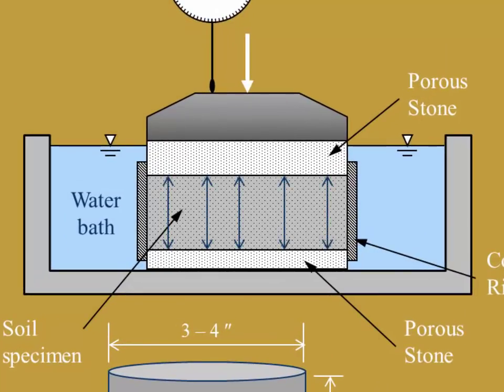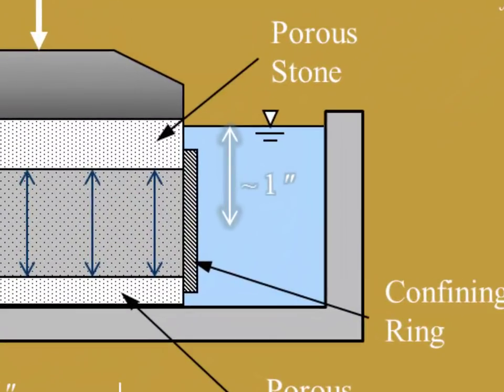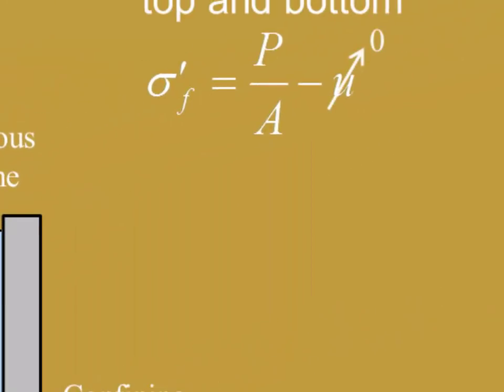There are porous stones placed on the top and bottom of the specimen to allow drainage of pore water out of the specimen. With porous stones on the top and bottom, the water can drain out from the center of the specimen in both directions. A loading cap is placed on top to distribute the applied forces over the entire area of the specimen, and a digital dial gauge or other measuring device is used to determine the vertical displacement. We place the load P on top of the specimen, and the loading cap distributes the load evenly over the specimen. The final effective stress that is applied is P over A minus the pore pressure U. Since the specimen is so thin, the average height of pressure is an inch or less, so we can assume that the pore pressure is zero, and the final effective stress is just P over A.